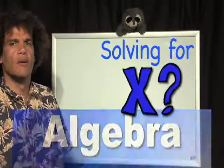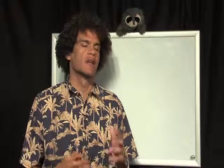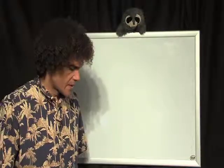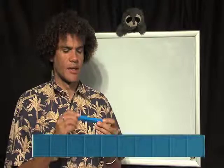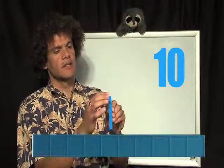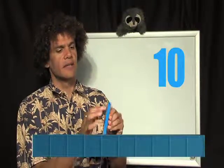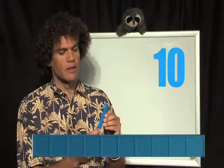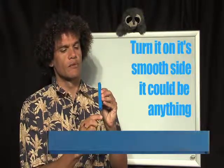Once again, when we're doing the Mortensen Mathematics in a classroom situation or tutoring with students, we spend a lot longer time developing these concepts. However, briefly, what I have here is a 10. And we can see here that on this side, we know how many it is — it's 10. Well, if I turn it on this side, it's smooth.